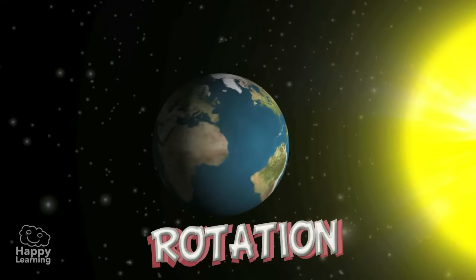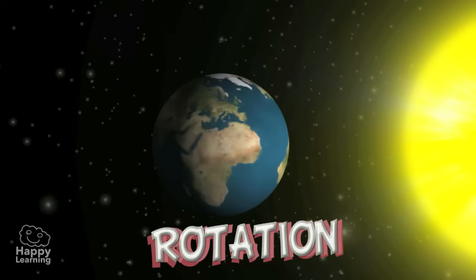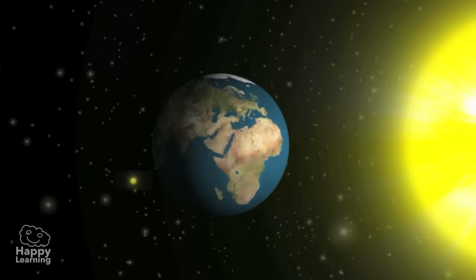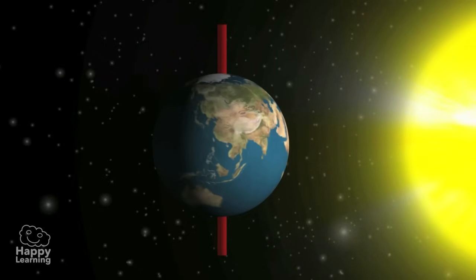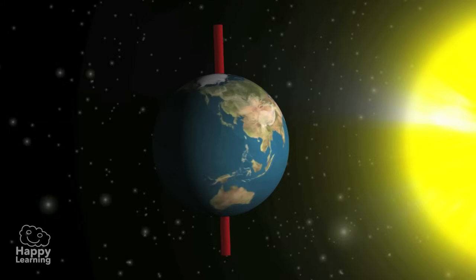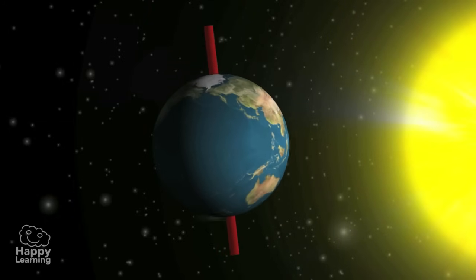Rotation is the movement of the Earth on its own axis. Rotate means to turn, so the Earth turns around a slightly inclined imaginary line that joins the two poles called the axis.